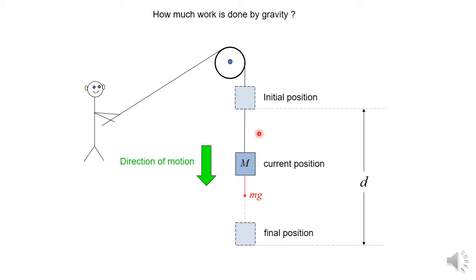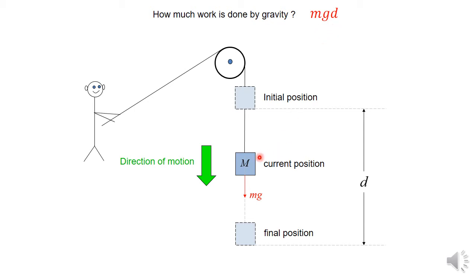The question is: what is the work done by gravity as the mass goes from the initial position to the final position? The direction of motion is downwards. If you remember from your mechanics course, the work is mg times d — the force times the distance.